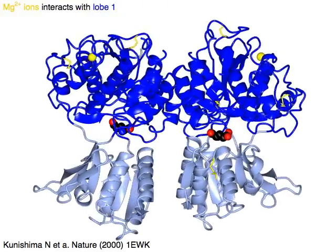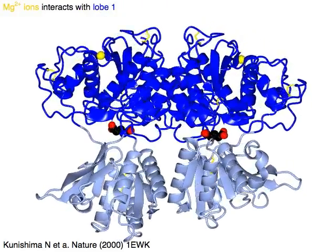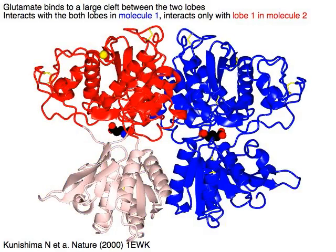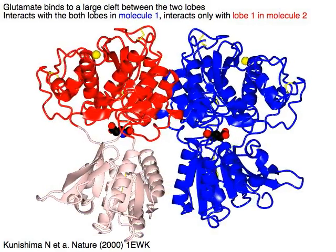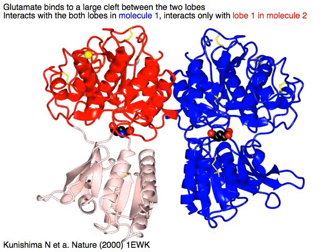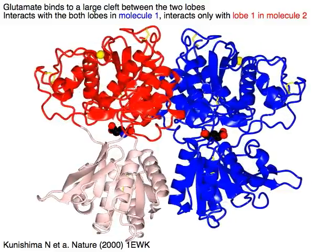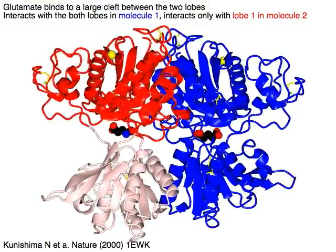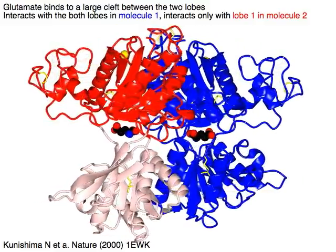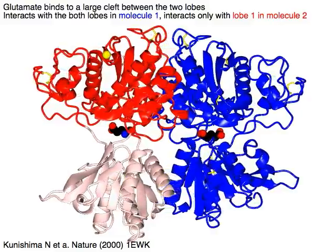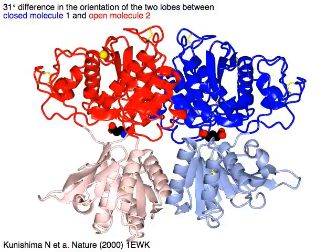Magnesium ions in yellow interact with lobe one in blue. Glutamate binds to a large cleft between the two lobes. It interacts with both lobes in molecule one in blue, and interacts only with lobe one of molecule two in red.